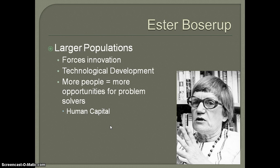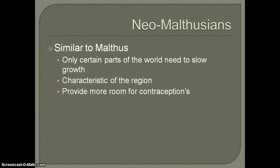Esther Boserup does not necessarily call for curbing population growth. The last group we'll talk about are called the Neo-Malthusians. From the term, you can see these are modern-day proponents of Malthus's concerns and theories — that we are potentially going to outpace ourselves in our ability to provide for the world's population. They are very much concerned with our use of natural resources, the intensive way we use some landscapes, and in the United States, our use of fossil fuels and water resources.